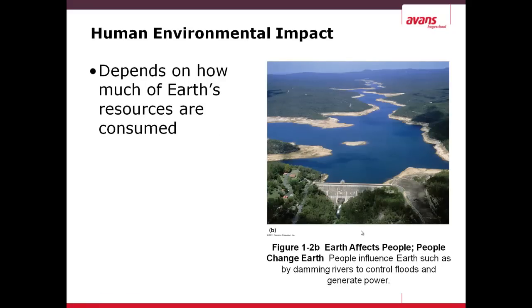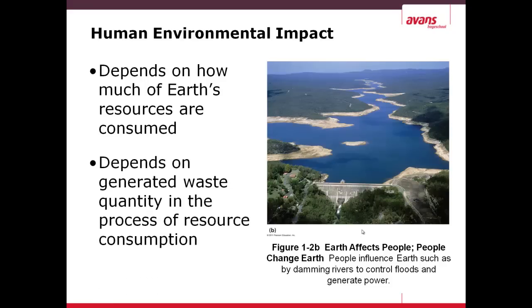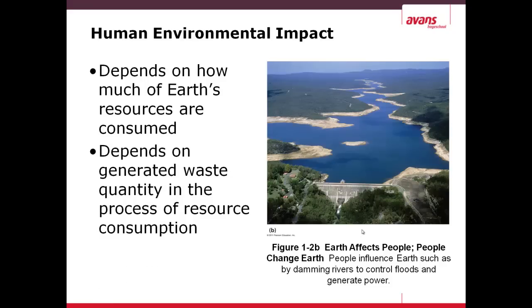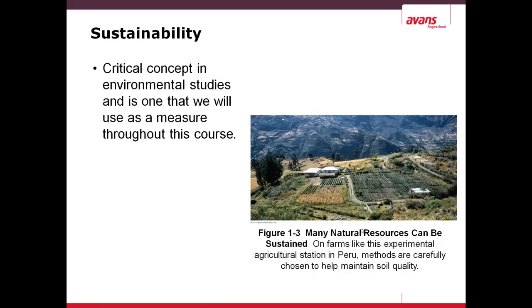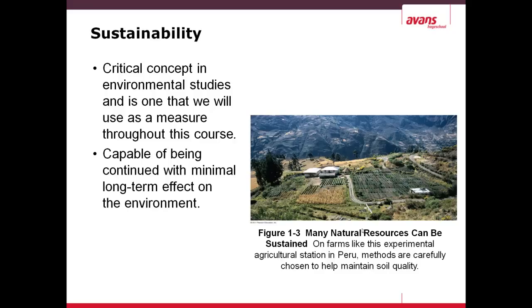The human environmental impact depends on how much of earth's resources are consumed. As you see on the right-hand side, there is a dam which has two purposes: the first is as a source of drinking water, and the second is generation of power. This also depends on the amount of generated waste, quantity, and the process of resource consumption. Sustainability is one of the critical concepts in environmental studies and is one that we will use as a measure throughout this course. It is, in essence, the capability of the human impact being continued with minimal long-term effect on the environment.